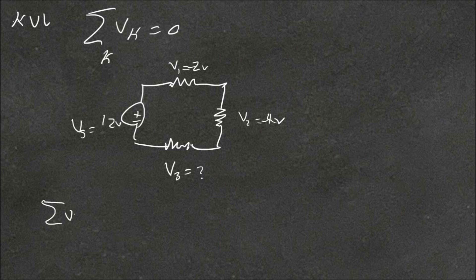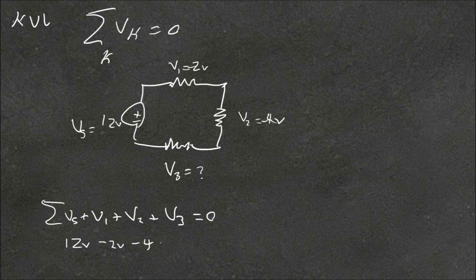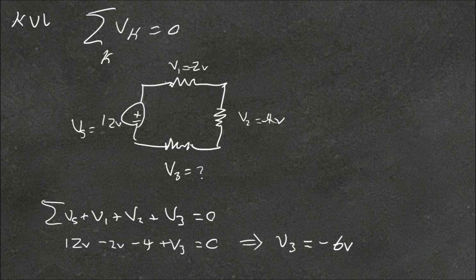So the summation of Vs plus V1 plus V2 plus V3 equals zero. So 12 volts minus 2 volts minus 4 volts plus whatever our V3 is equals zero. Rearranging, we find that V3 is equal to minus 6 volts. The sign of the voltage indicates the direction of the potential difference — the voltage source is adding volts to the circuit, but the resistors are removing volts. You can swap that convention and it would still make sense.